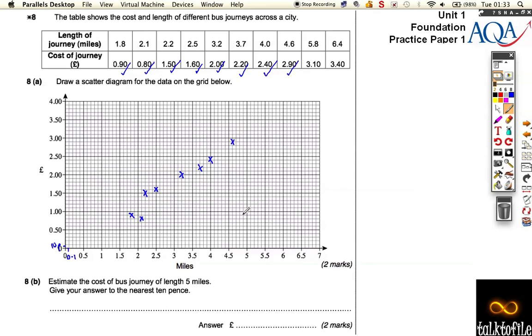And 5.8 goes to 3 pounds 20. 5.5, 5.8, so a bit of a gap, goes to 3 pounds 10. And then the last one is 6.4, which is just 1 to the left of this line, goes to 3 pounds 40, so it's just there.